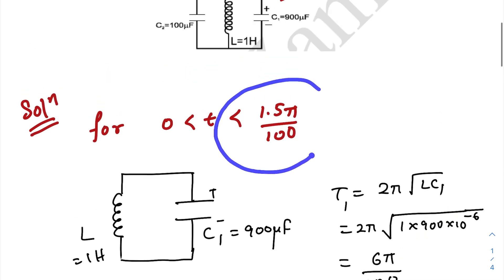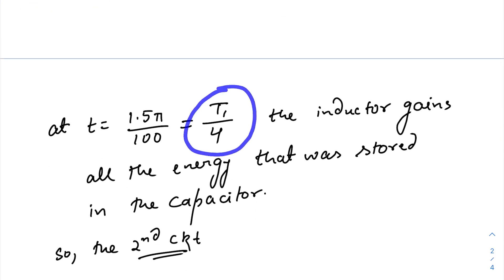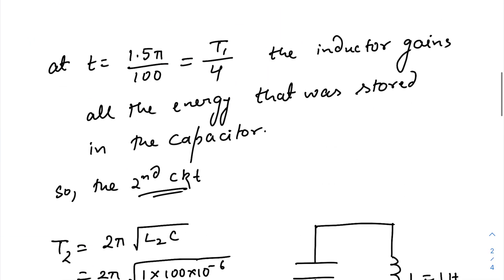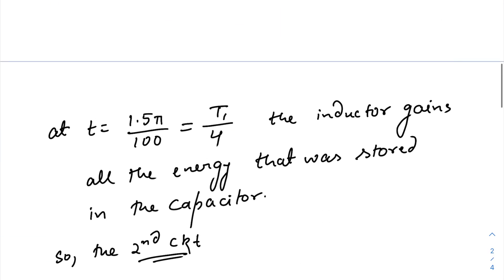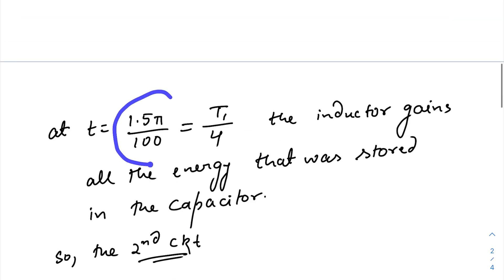Now at t equals to 1.5π/100 seconds, which is equal to one-fourth of the time period of the oscillation, so in one-fourth of the time period what happens? The capacitor gives all of its energy, supplies all of its energy to this inductor in the form of magnetic field. Okay, so the inductor gains all the energy that was initially stored inside the capacitor at 1.5π/100.